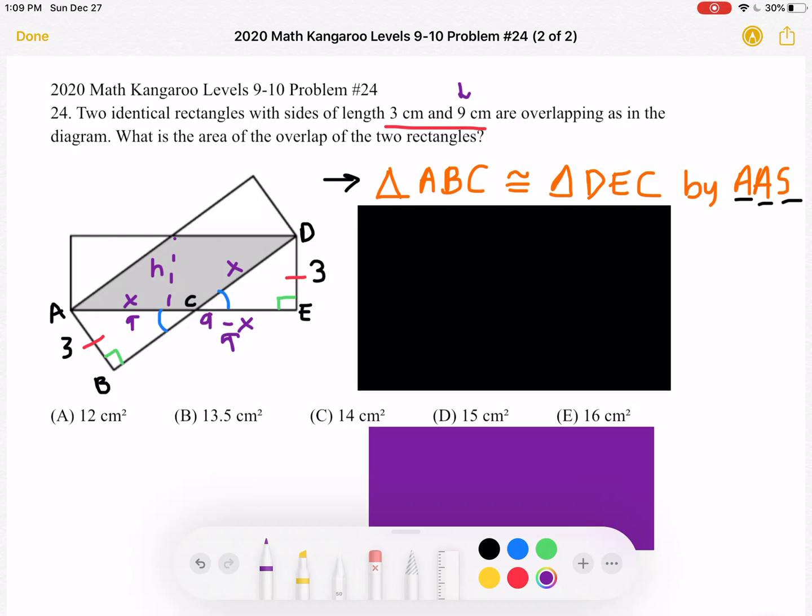And this is important because we established that these two triangles are congruent. That means that AC must be congruent to DC because corresponding parts of congruent triangles are congruent.